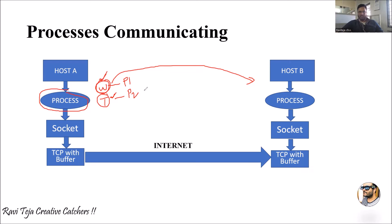Suppose you are chatting on WhatsApp and you receive an email from Gmail — that Gmail application also has its own different port number. All applications installed on a host have different port numbers through which they operate individually to transfer data from one host to another. All of this happens in the block called the process, which is the execution of applications, software, or programs.